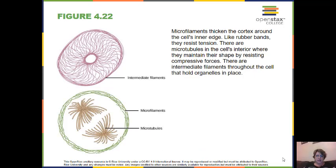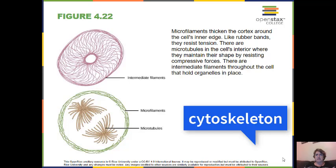Next we have the cytoskeleton. There are three types of fibers within the cytoskeleton: microfilaments, intermediate filaments, and microtubules. Microfilaments thicken the cortex around the cell's inner edge like rubber bands and resist tension. Microtubules in the cell's interior maintain shape by resisting compressive forces. Intermediate filaments throughout the cell hold the organelles in place. We're going to look at these in more detail.